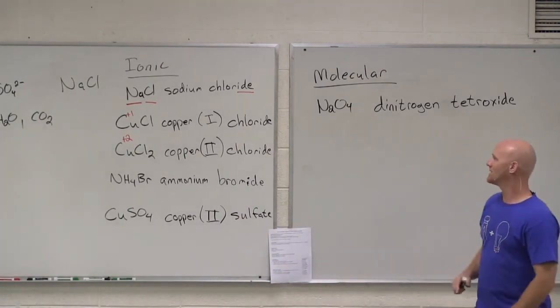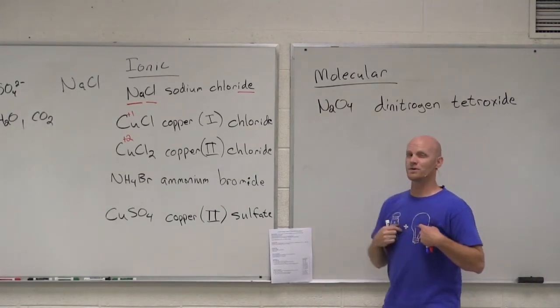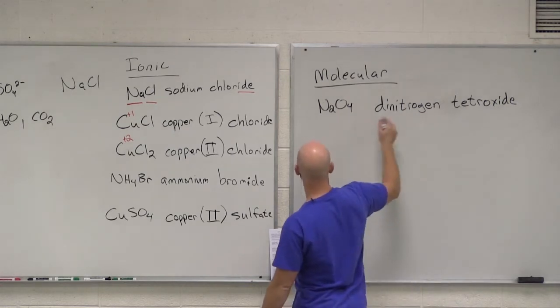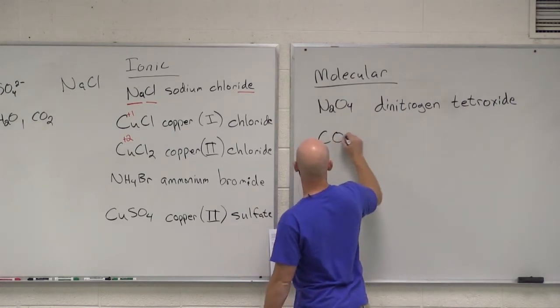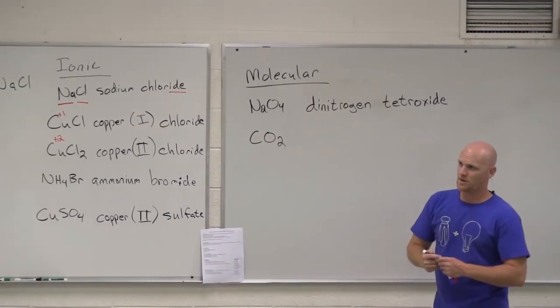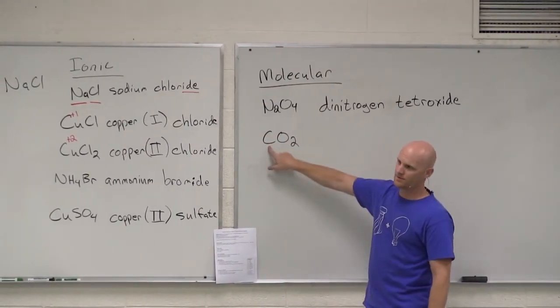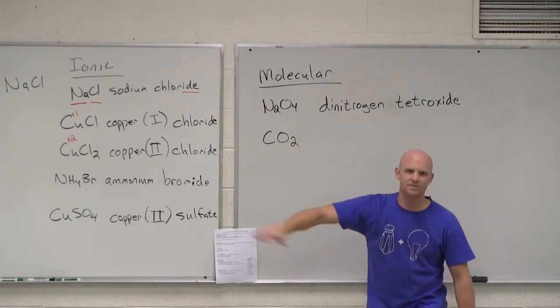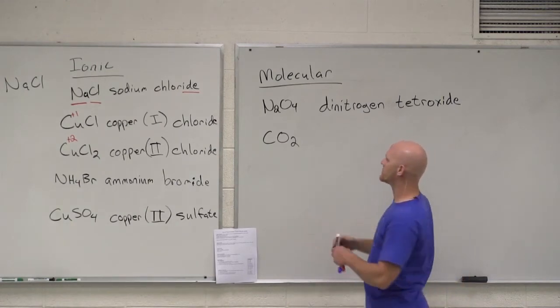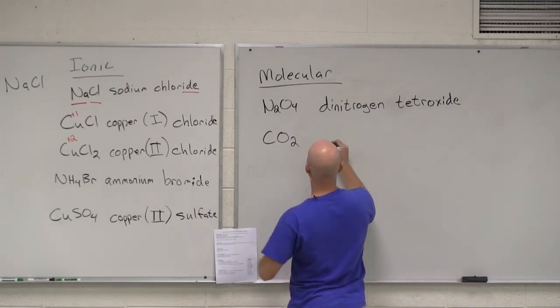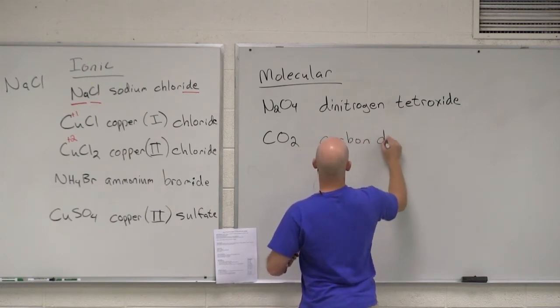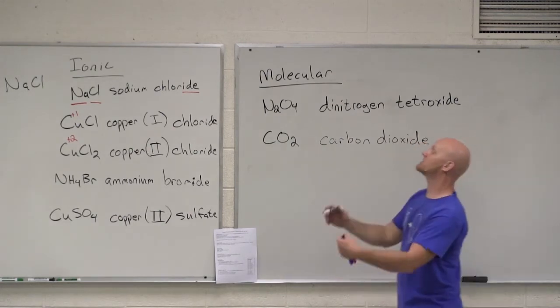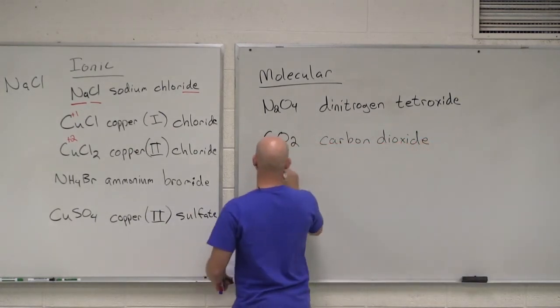The lords of chemistry who set out the rules for nomenclature thought this was too easy. They decided let's make this a little more complex. If we look at CO2, what is the Greek prefix for one? Mono. But they said if you only have one of the first element, we leave the mono off. If you include the mono, it's wrong. So instead of saying monocarbon dioxide, we just say carbon dioxide.